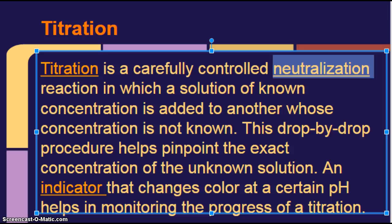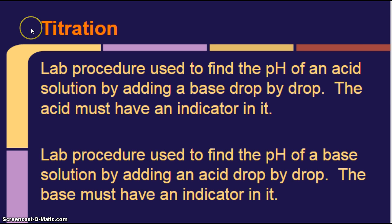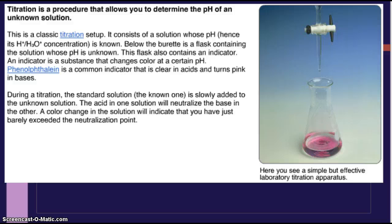An indicator that changes color at a certain pH helps in monitoring the progress of a titration. So our second word there is indicator, something that changes color based on the pH. More definitions of titration. Titration is simply a lab procedure used to find the pH of an acid solution by adding a base drop-by-drop. The acid must have an indicator in it. Or instead of starting with an acid and adding a base, it's a lab procedure used to find the pH of a base solution by adding an acid drop-by-drop. Again, the base must have an indicator in it.